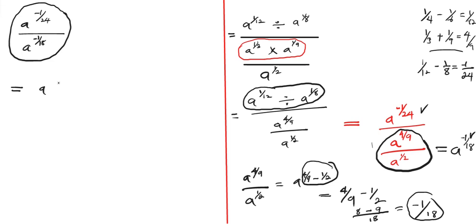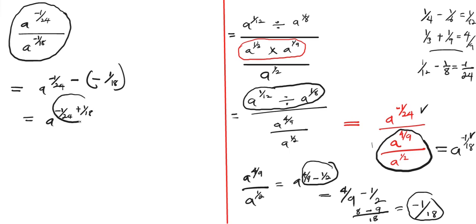This equals a to the power negative one over 24 minus negative one over 18. When this negative multiplies this negative it turns positive, so we have a to the power negative one over 24 plus one over 18. Let's find the LCM — the LCM of 24 and 18 is 432. Negative one times 18 gives negative 18.